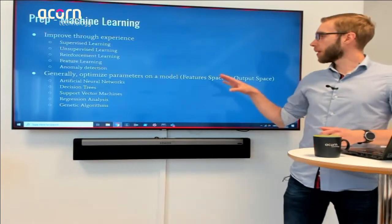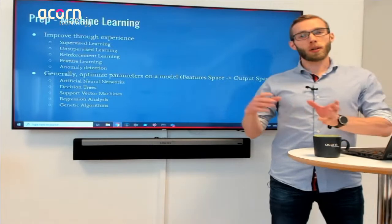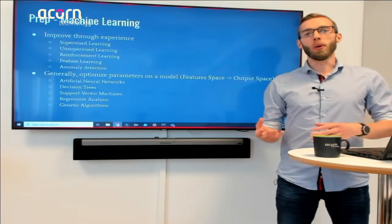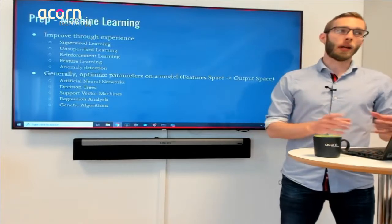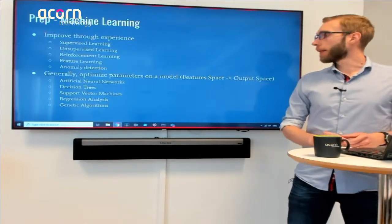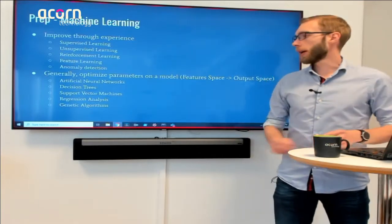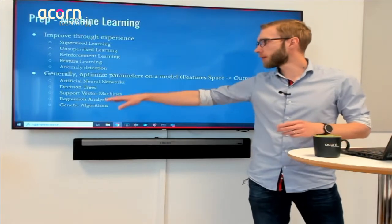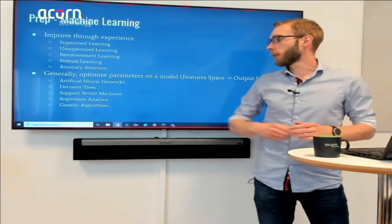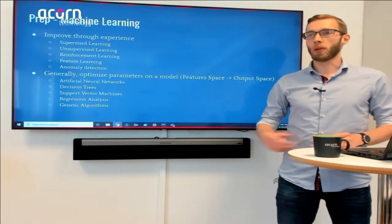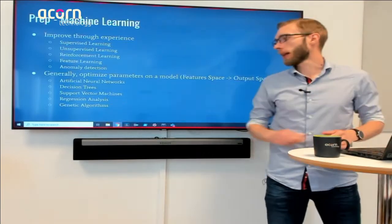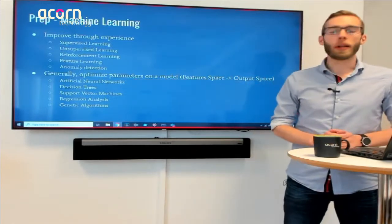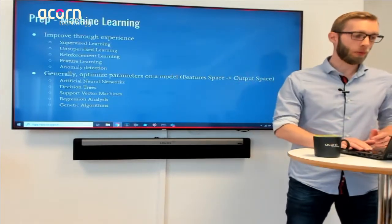What you're trying to do is to construct some kind of model and then optimize the parameters of that model to get it to do the tasks that we want. There are lots of different ways to construct a model — neural networks, support vector machines, regression analysis, and also genetic algorithms. We're going to play with artificial neural networks today, but that's more later on.